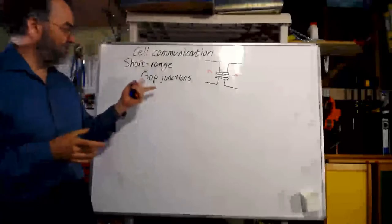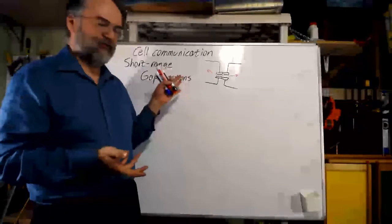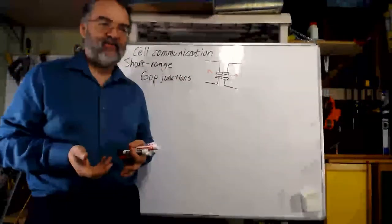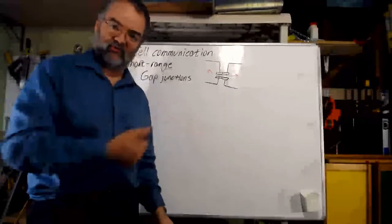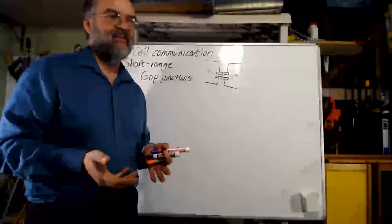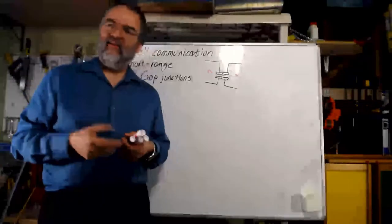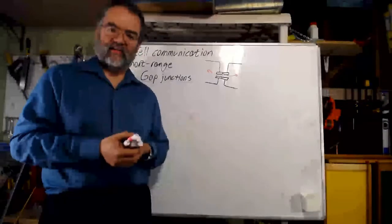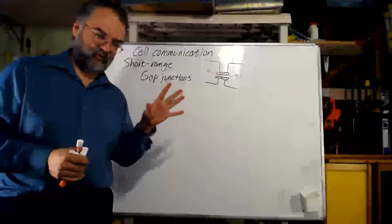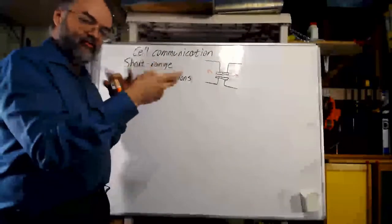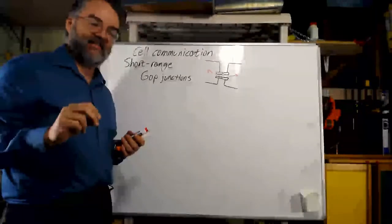When I talk about cell communication I try to liken it to how humans communicate. For gap junctions, this would be like communicating by shaking someone's hand and growing blood vessels between you so blood flows back and forth — which is not something humans do. You see gap junctions between smooth muscle and cardiac muscle cells, and in some cases between neurons.